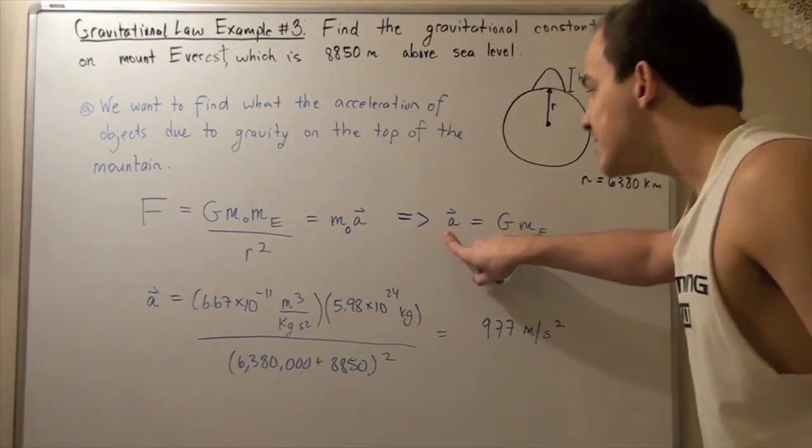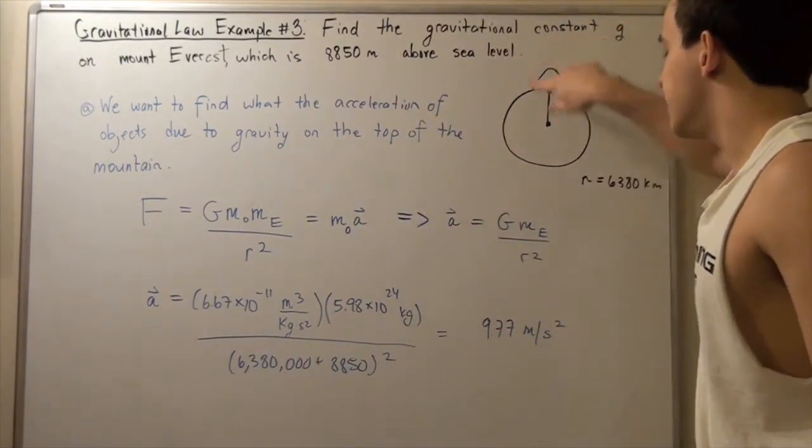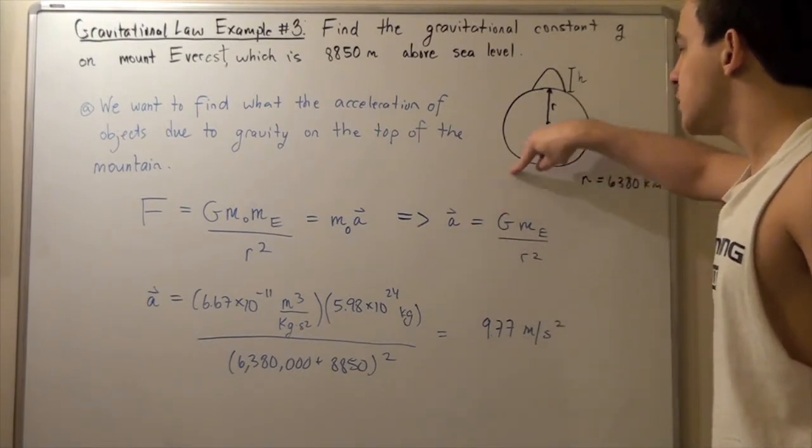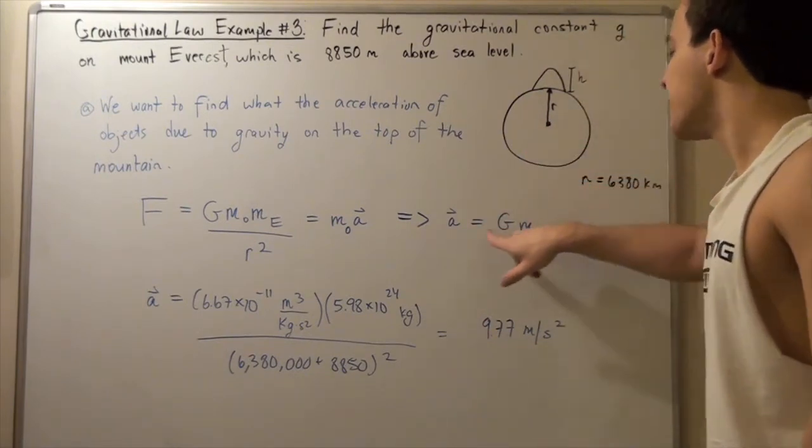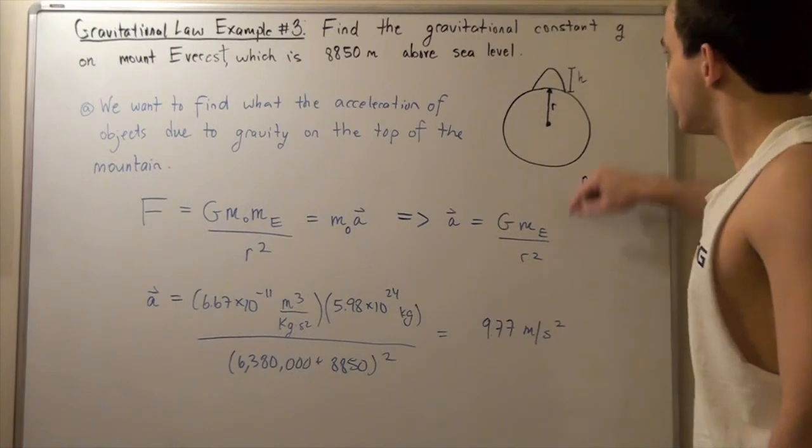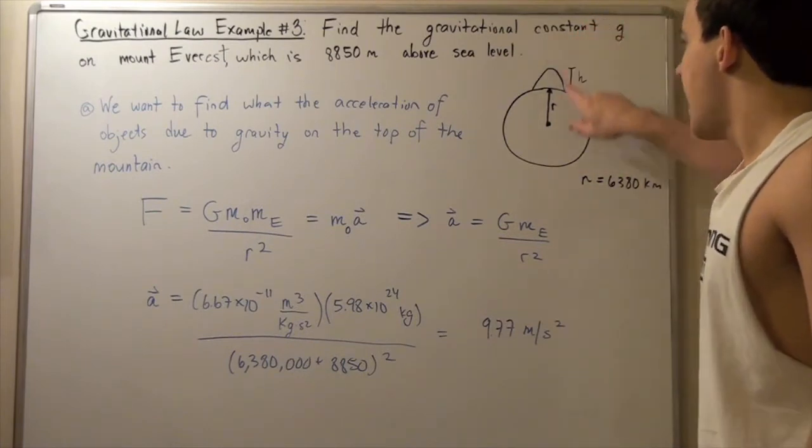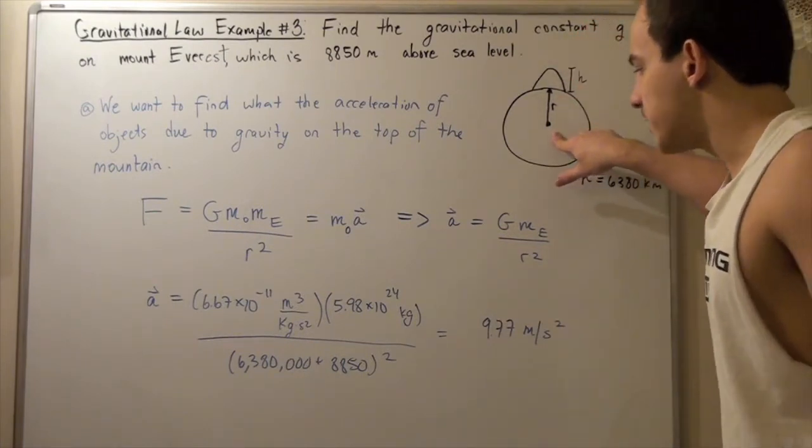We get our acceleration on top of the mountain is equal to the gravitational constant times the mass of the Earth, divided by the distance between the top of the mountain and the center of the Earth squared.